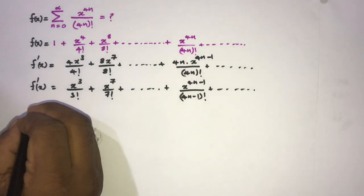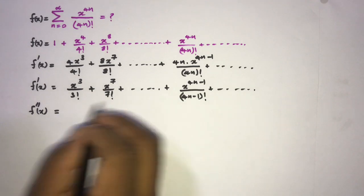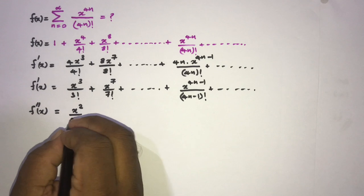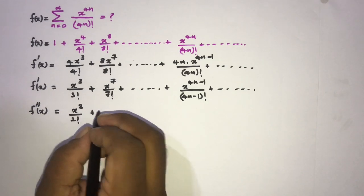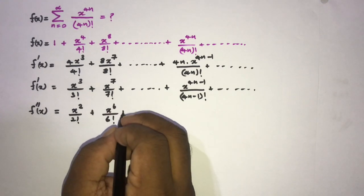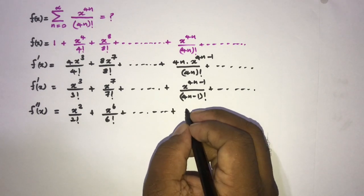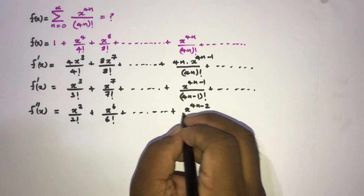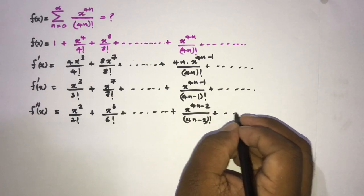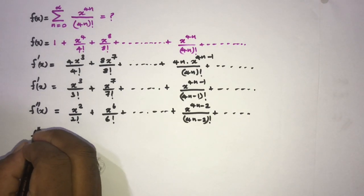Now I am going to take the second derivative. So f double prime of x equals: x squared over 2 factorial, plus x to the sixth power over 6 factorial, plus x to the 4n minus 2 over 4n minus 2 factorial, plus so on.